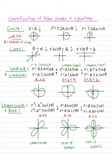Lemniscate and rose: the lemniscate is the figure-eight shape. Rose curves have more than just two petals — you could have three petals, four, five, six, seven, depending on what kind of equation you're given. We'll see that later on.